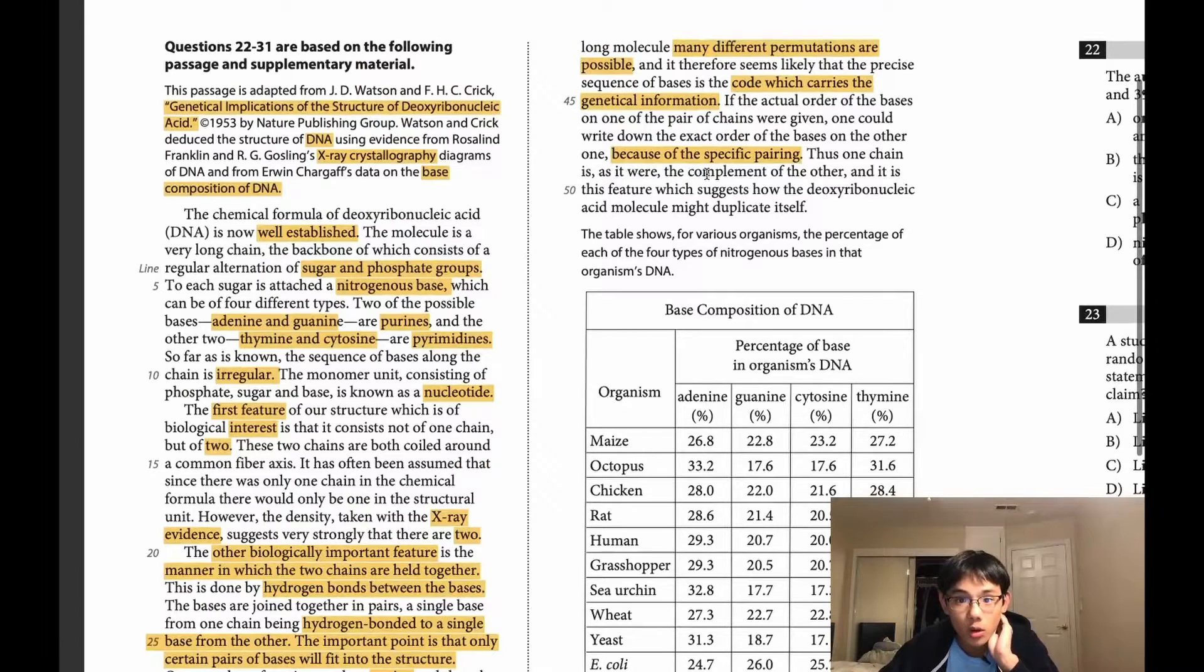Thus one chain is, as it were, the complement of the other. This is also key information. One chain is complementary to the other. And it is this feature which suggests how the deoxyribonucleic acid molecule might duplicate itself. So this complementary manner that the two strands have is key information that's important to how DNA duplicates and DNA replicates within cells.